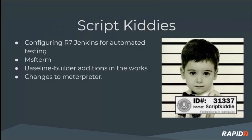Regarding Meterpreter changes: we have a fix for Python Meterpreter where if it couldn't connect back to a particular URL it would spin and use 100% CPU — not a great experience. Now it actually does a progressive fallback if it can't reach a target host. Also, a community member did a triage of Windows Meterpreter and found a few memory leaks and fixed those — thanks to Suvi for fixing those things.